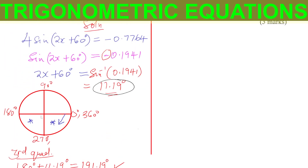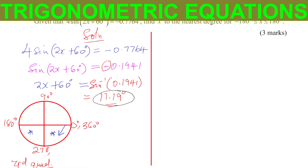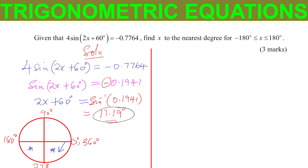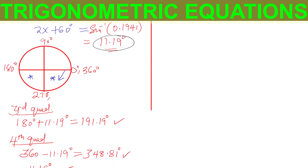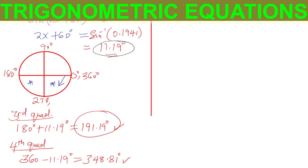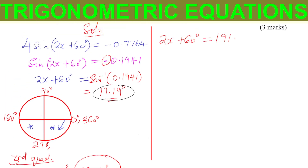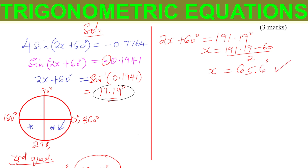Now we haven't yet obtained the required values of x. Using the equation 2x + 60° = 191.19°, x is given by (191.19 − 60) ÷ 2, which equals 65.6 degrees. That is the first value of x.